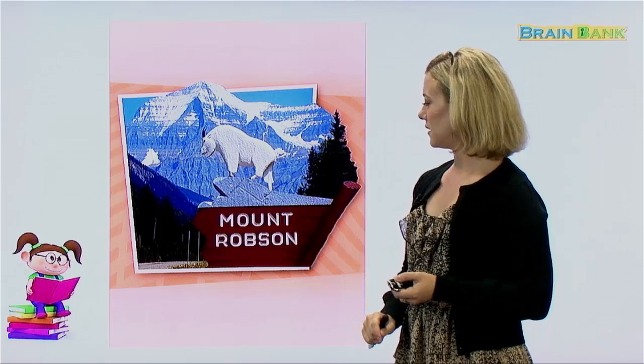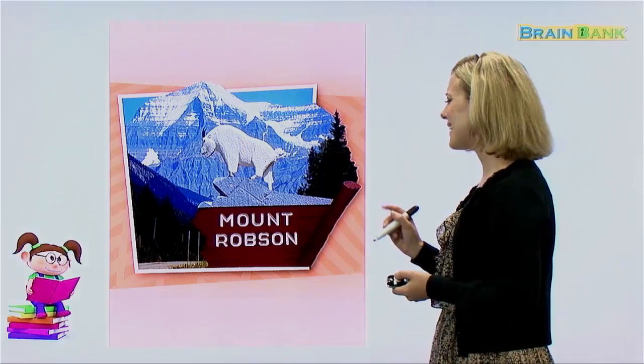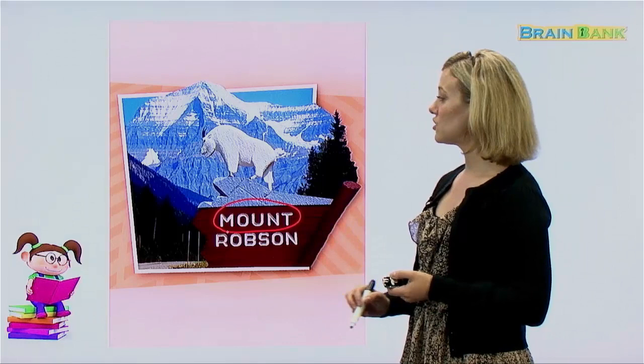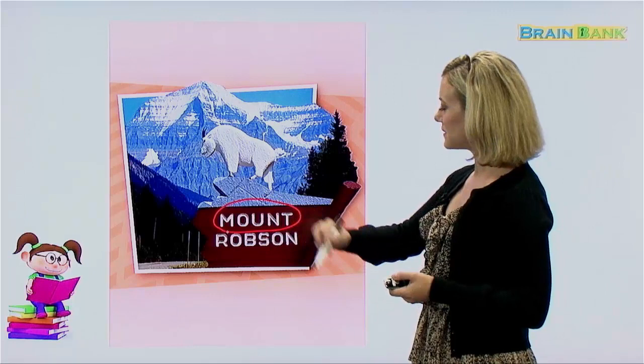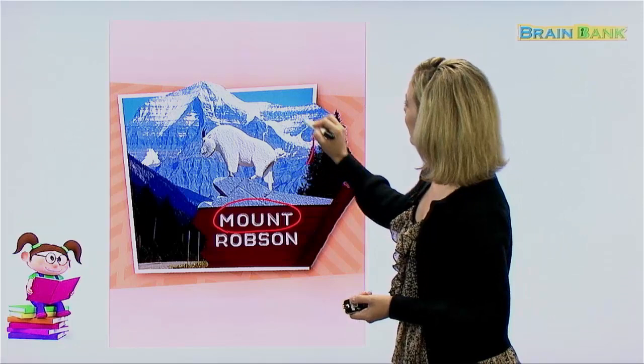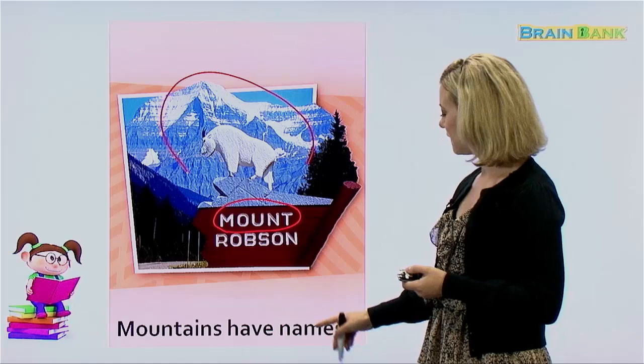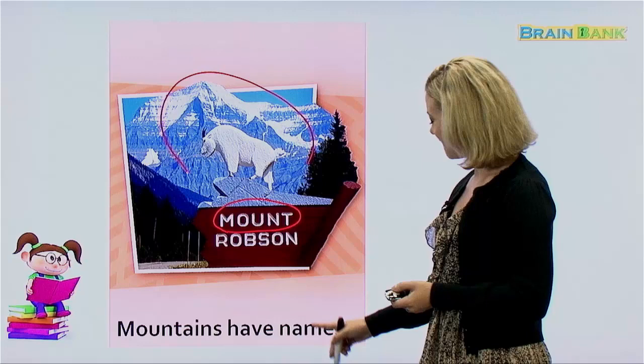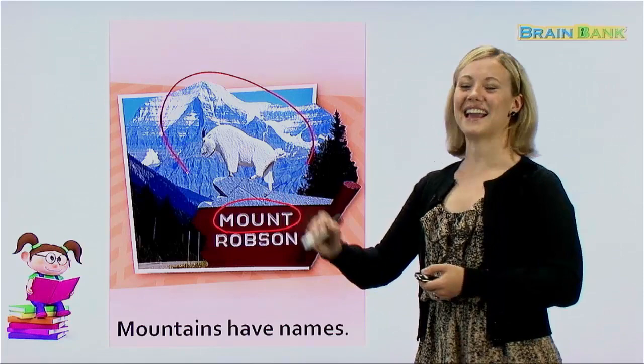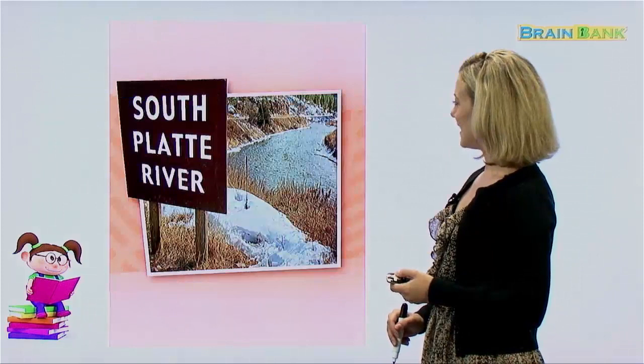Now here we have a name: Mount Robson. Do you think that's the name of a person? Probably not. When we see the word 'mount,' that is short for mountain. So we can guess that this is the name of a mountain — probably this large mountain in the back. Mountains have names. Can we read this all together? Mountains have names. Yes, they do. And this mountain is called Mount Robson.